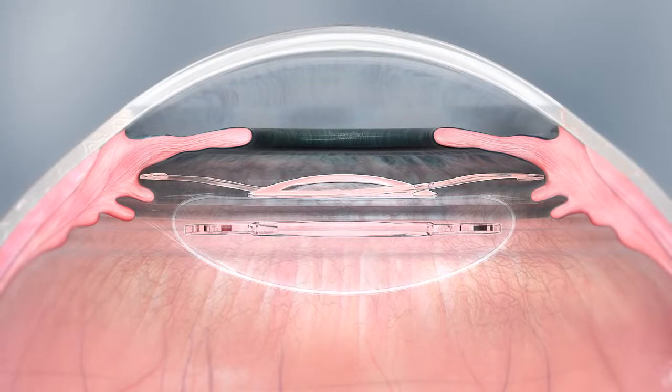The concave-convex optic ensures that the two lenses do not touch, thus avoiding the formation of interlenticular membranes.